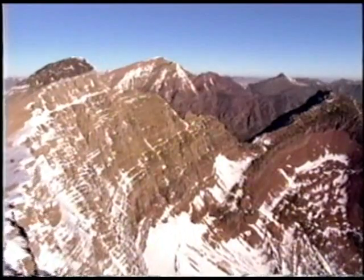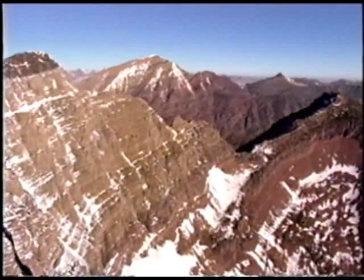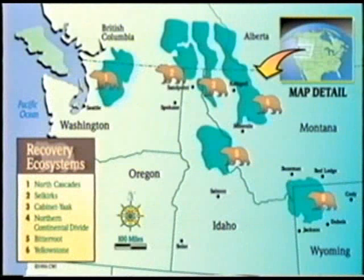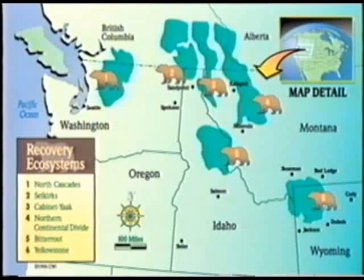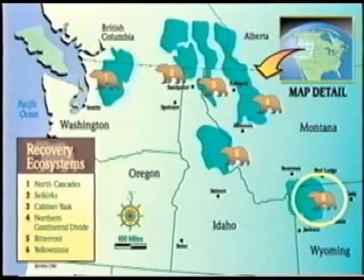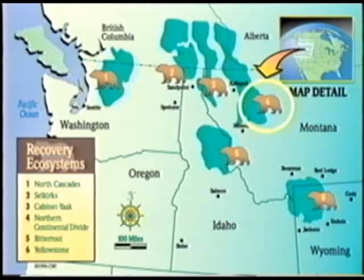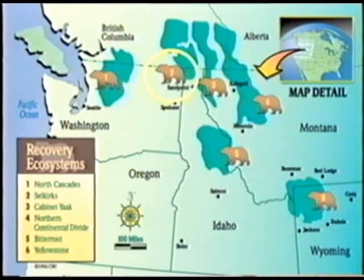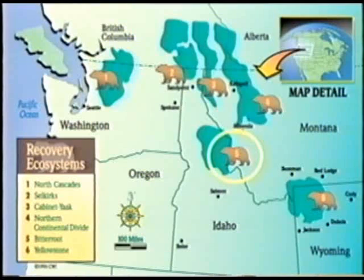Today, grizzly bear populations are secure in exclusive portions of the United States. In the lower 48 states, they were listed as threatened under the Endangered Species Act in 1975. The current distribution and population in the continental United States is less than 2% of its original size. Grizzly bears now exist in perhaps 5 or 6 ecosystems in the lower 48 states, including Yellowstone National Park and adjacent areas of Wyoming, Idaho, and Montana; the Northern Continental Divide in Montana; the Cabinet-Yaak Ecosystem in Montana and Idaho; the Selkirk Ecosystem in Idaho and Washington; the Bitterroot Ecosystem of Idaho and Montana; and the Northern Cascades in Washington.